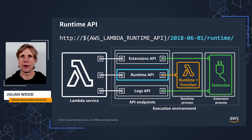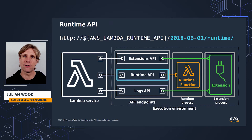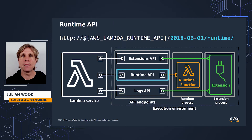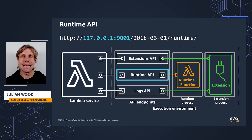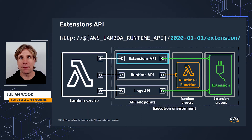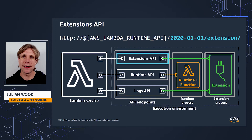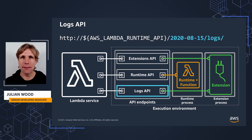Here's the Runtime API endpoint the runtime calls to get function invocation events. The API path is /2018-06-01, which is the runtime API version, and then the path /runtime. The AWS_LAMBDA_RUNTIME_API environment variable is made available by Lambda to point to this address. As it's in the execution environment, it resolves to localhost 127.0.0.1 on port 9001. The Extensions API uses the same environment variable but communicates with the path /2020-01-01 as the version, and then /extension. The Logs API version is 2020-08-15, and then the path /logs.